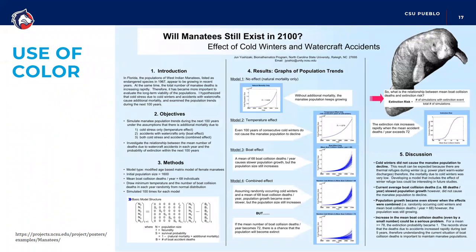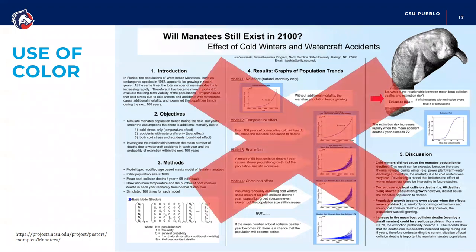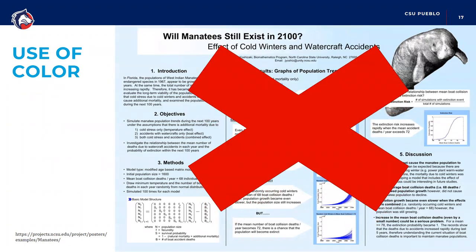Let's talk about the use of color in our posters. This first example poster has a full colored background — a large chunk of it has a blue color on it. For our purposes, that's a no — we don't want full color backgrounds. When you go to get it approved to be printed, they're going to say you need to have a white background. That guidance is on the STEM symposium flyer, so just keep that in mind when you're designing your poster.